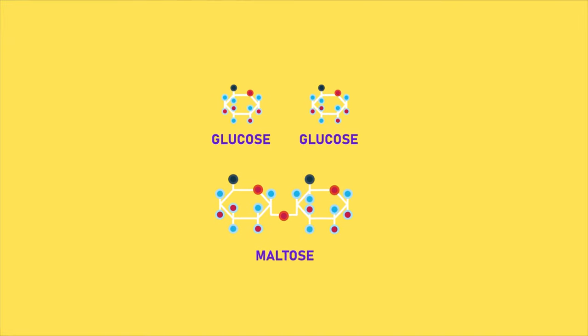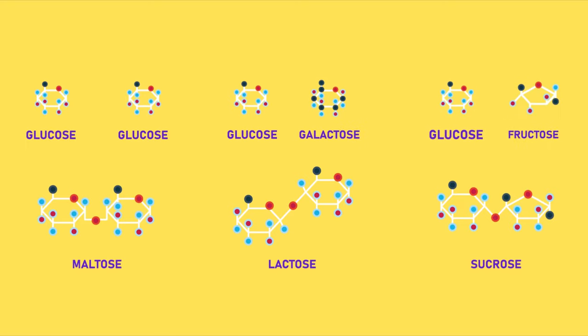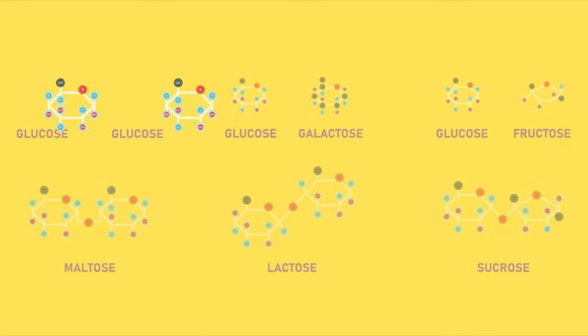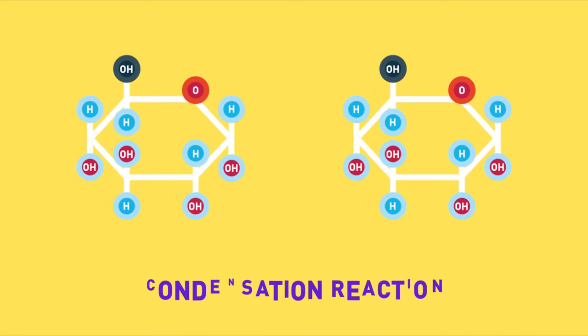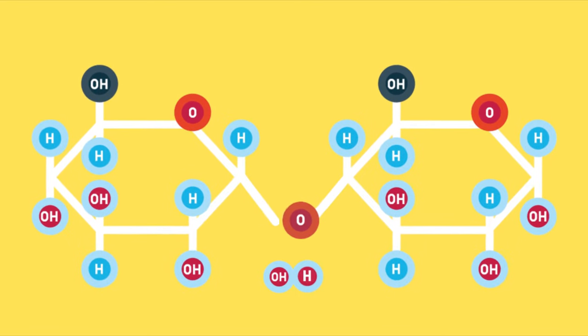As mentioned before, the formulation of one molecule of disaccharide requires two molecules of simple sugars. Each reaction is known as condensation reaction. Condensation is a chemical reaction whereby two simple molecules are joined together to form a larger molecule, with the removal of one molecule of water.